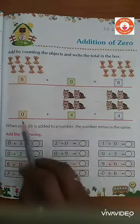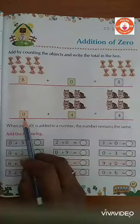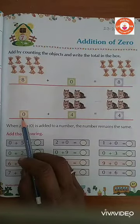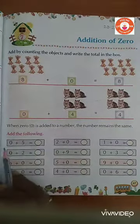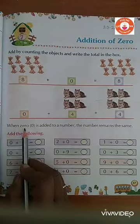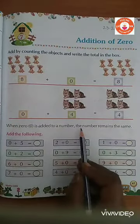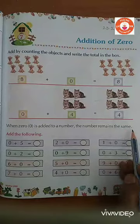If you add 0 to any number, the answer will be the same number. When 0 is added to a number, the number remains the same.